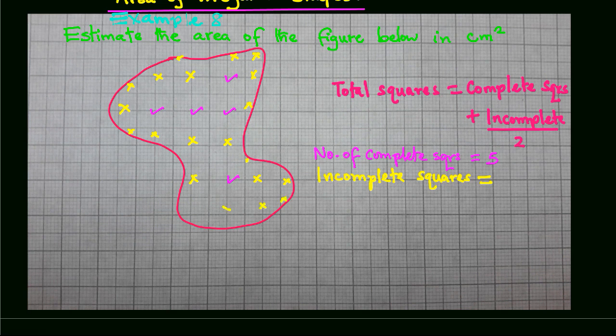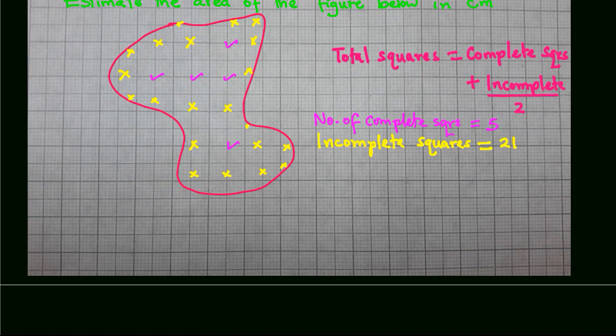Twenty and twenty-one. So they are twenty-one incomplete squares.